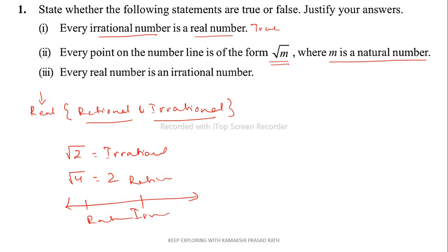So any point you take on this number line will surely be a real number — whether it is √1, √2, √5, or anything. It can be any natural number that will surely lie on this number line. So every point on the number line is of the form √m where m is a natural number — that statement will be true.